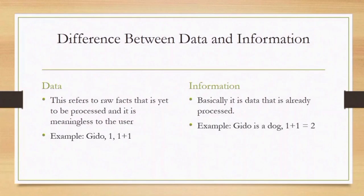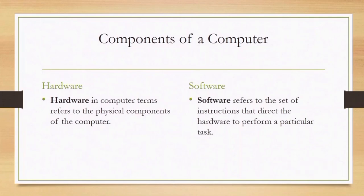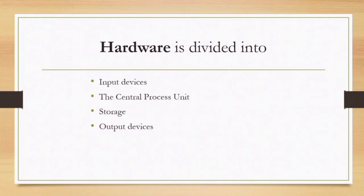The next topic is components of the computer. We have the hardware and the software. Hardware is the computer term that refers to the physical components of the computer. Software is the set of instructions that direct the hardware to perform a particular task. Hardware is divided into four parts: input devices, the CPU or central processing unit, storage, and output devices.